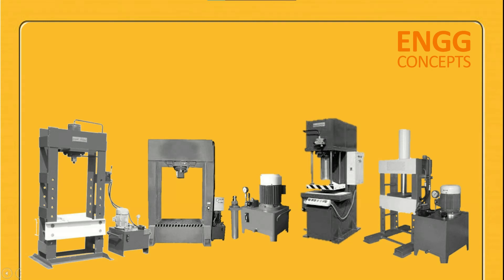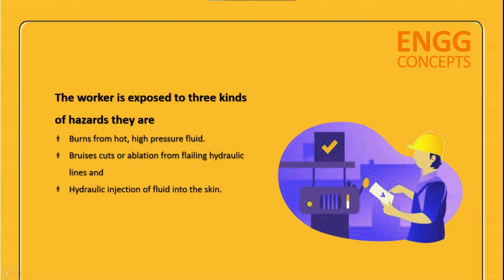Fluid under tremendous pressure is hot. If hydraulic lines burst, they can cause serious injuries. Workers are exposed to three kinds of hazards: burns from hot high-pressure fluid, bruises, cuts, or abrasion from flailing hydraulic lines, and hydraulic injection of fluid into the skin.